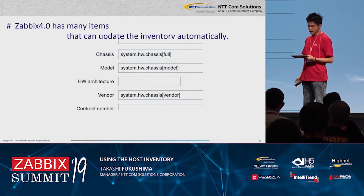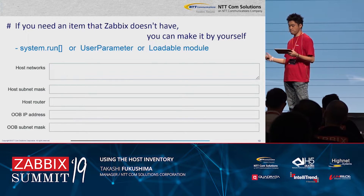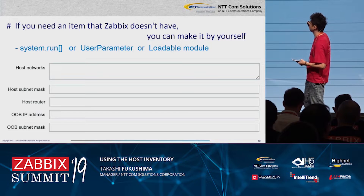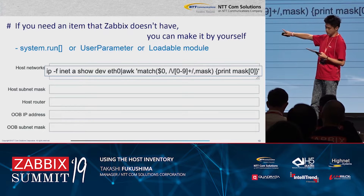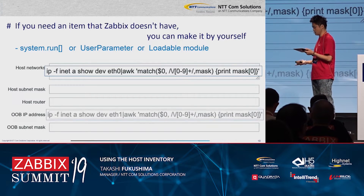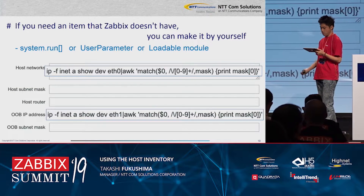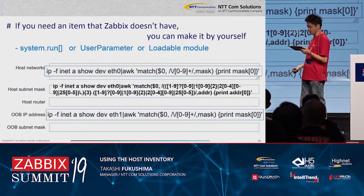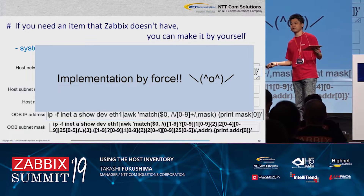If you need an item that Zabbix doesn't have, you can make it by yourself using system.run, user parameter, or loadable module. For example, host network address is this one, out-of-band IP address is this one, host subnet mask is this one, and out-of-band subnet mask is this one.